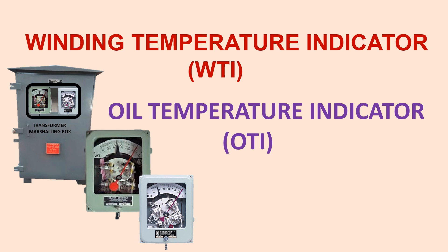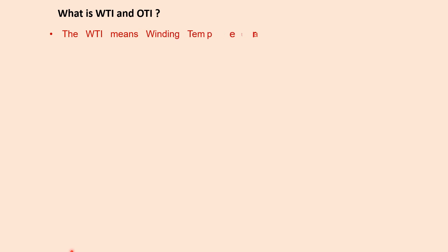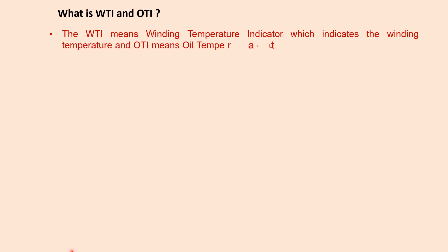Welcome to my YouTube channel. Today a discussion will be done on temperature indicator — the Winding Temperature Indicator and Oil Temperature Indicator. What is WTI and OTI? WTI means Winding Temperature Indicator, which indicates the winding temperature, and OTI means Oil Temperature Indicator, which indicates the oil temperature at that time.